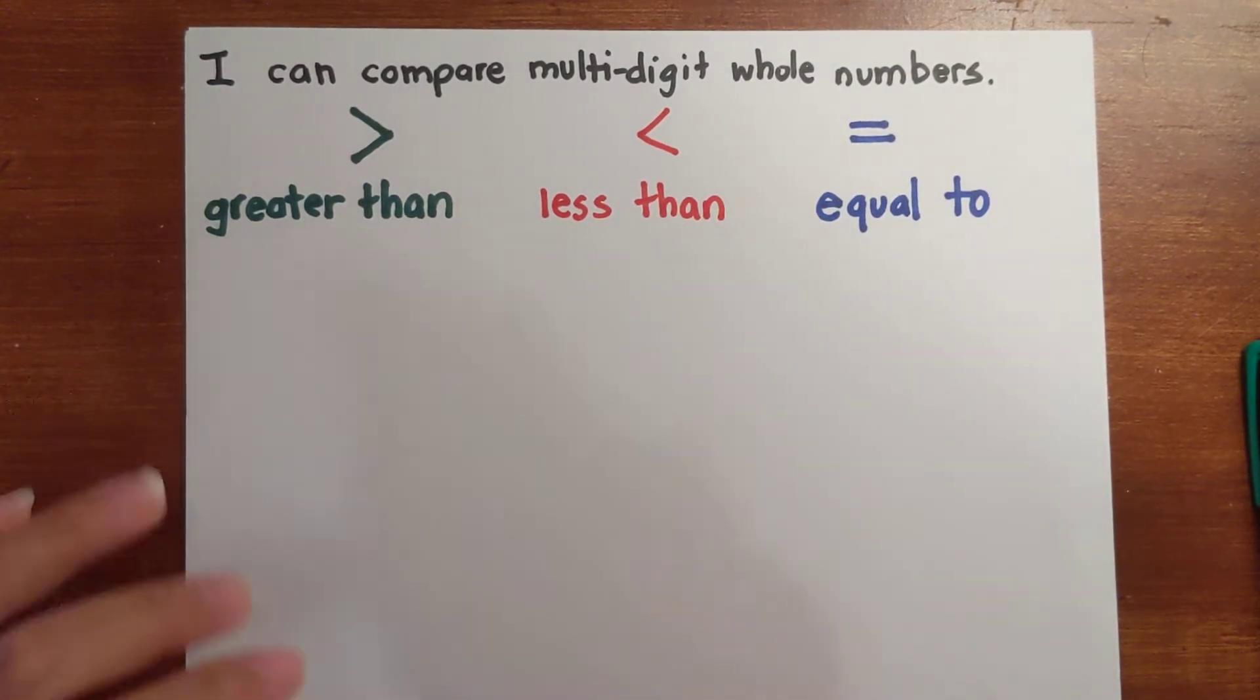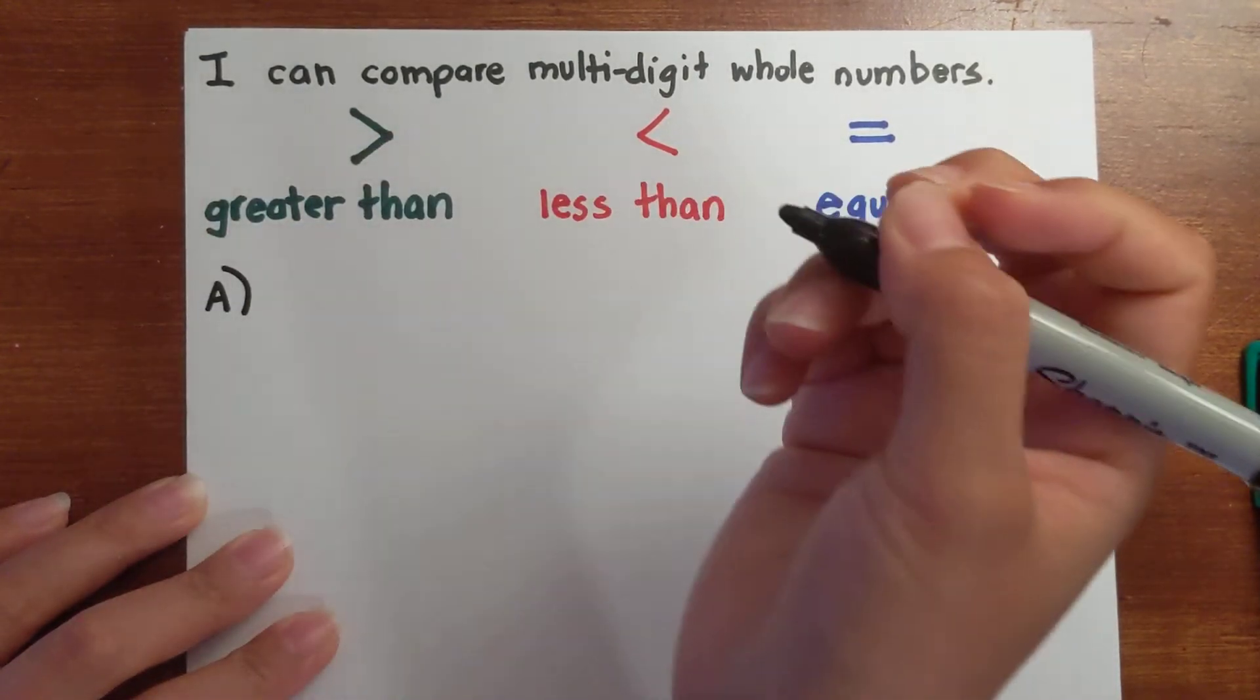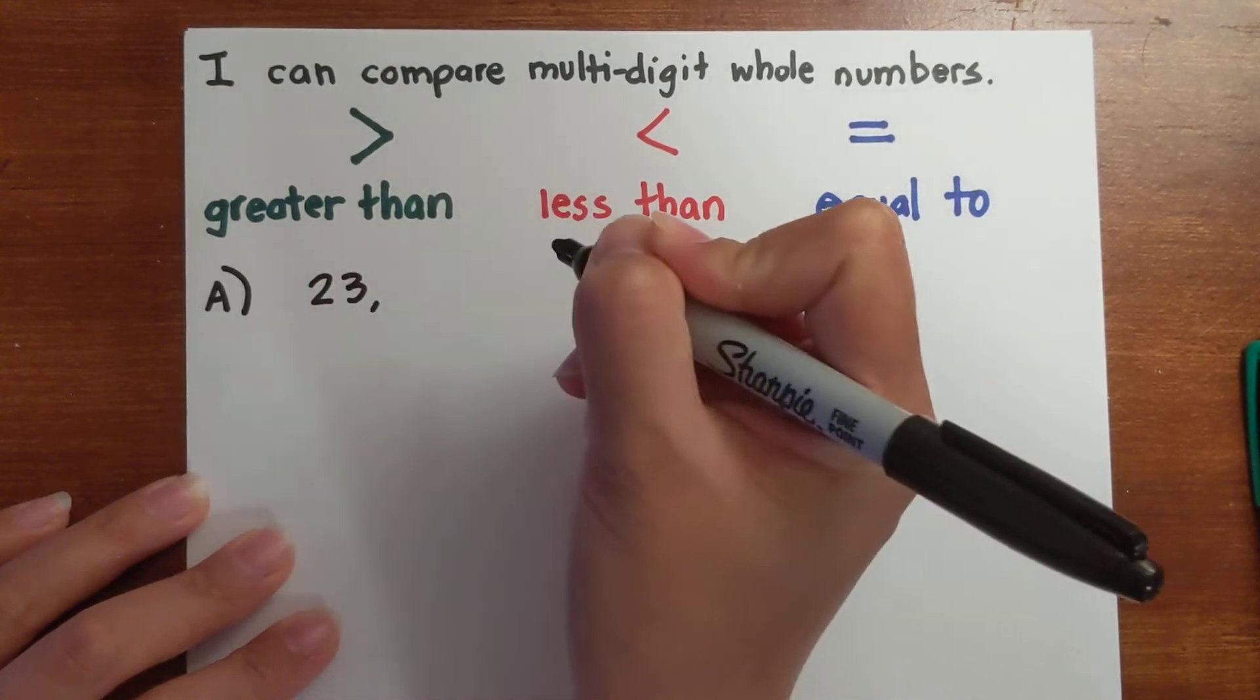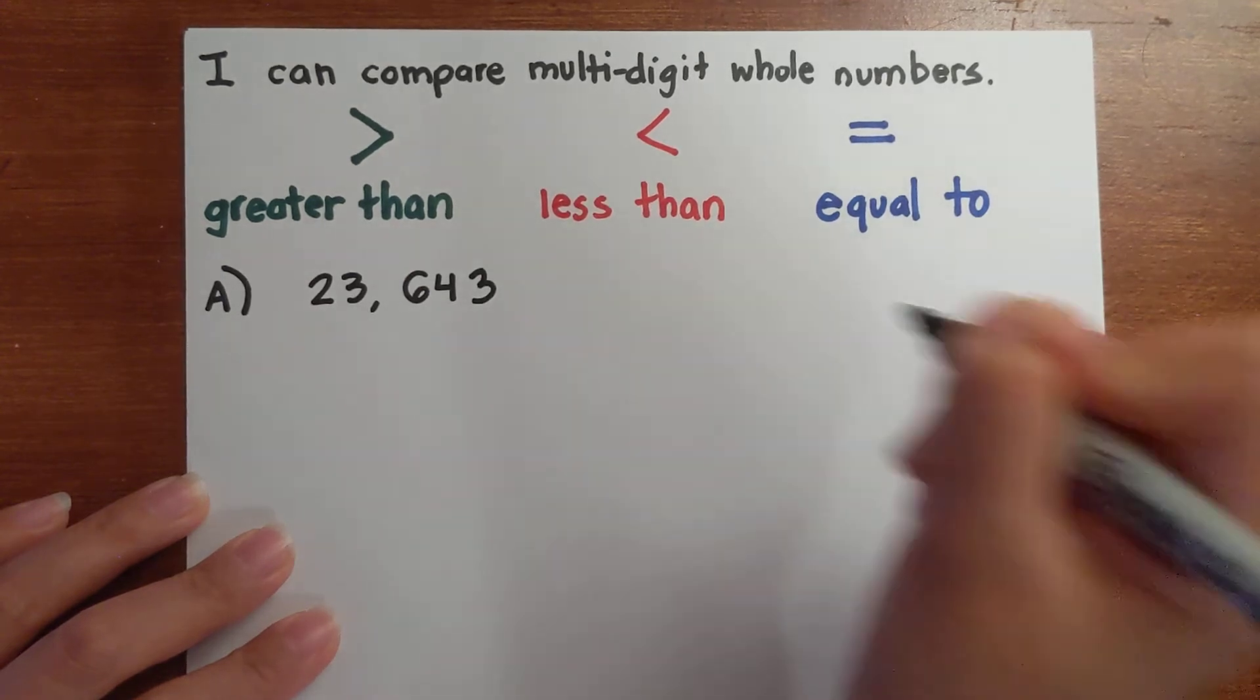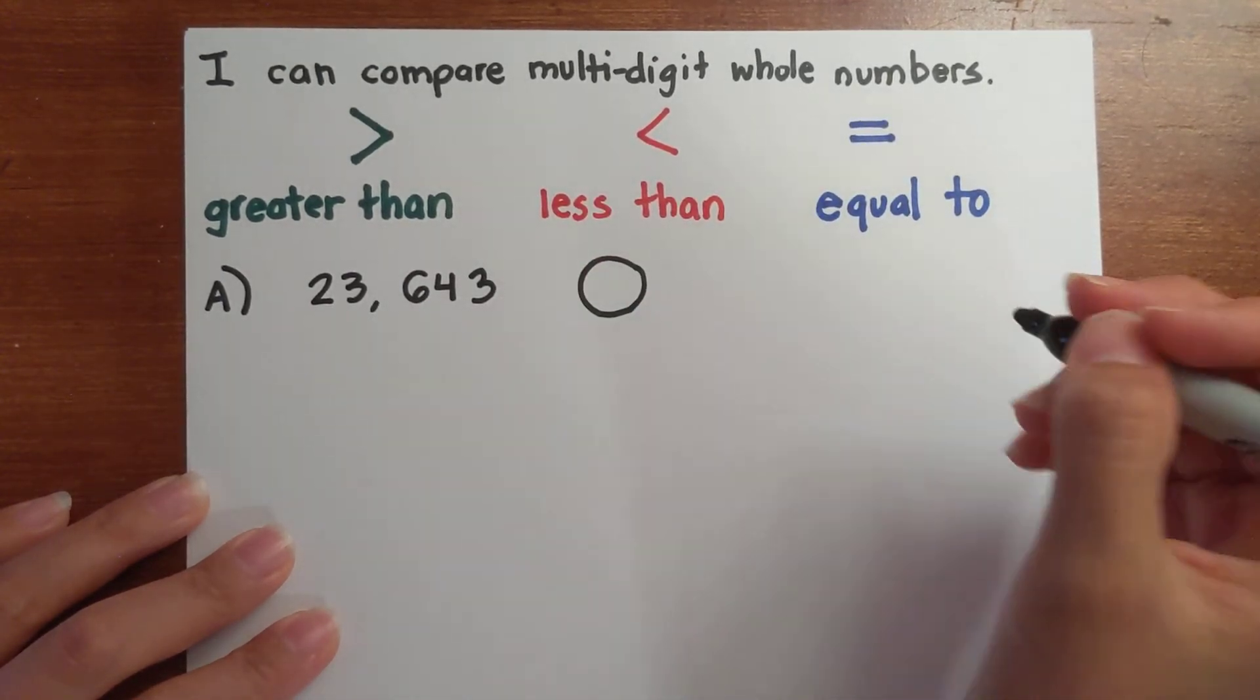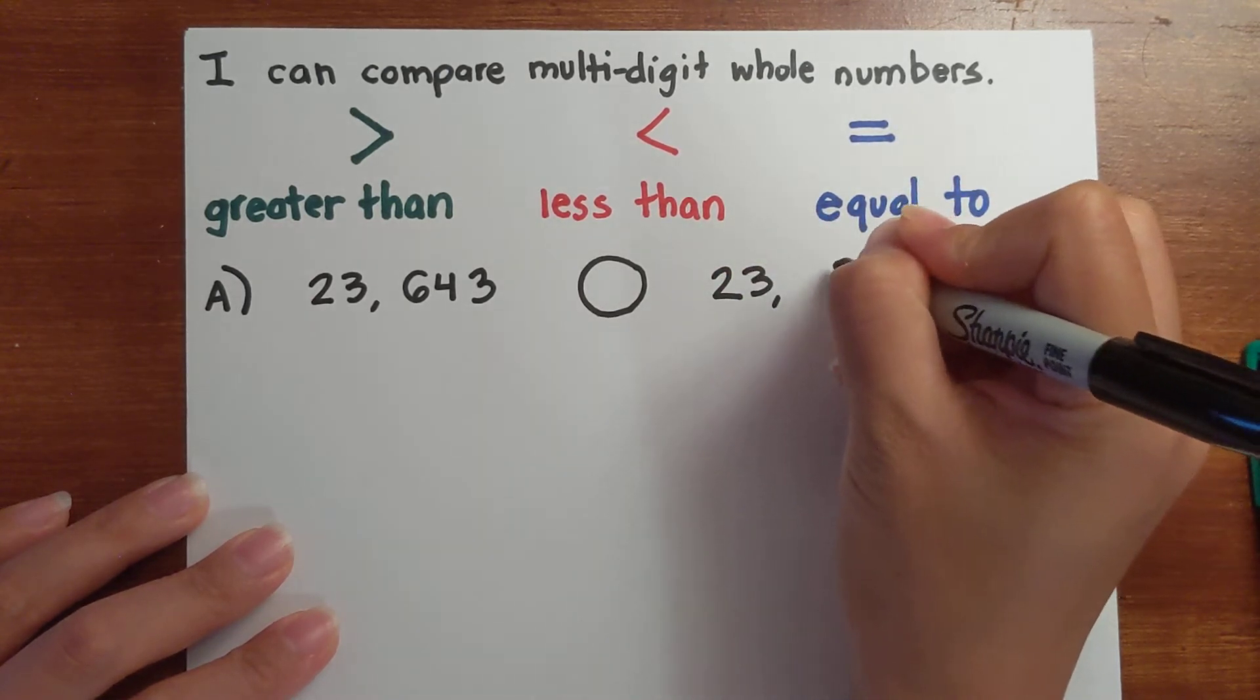Let's do example problem A. Let's say I have two values that I'm comparing. The first value is 23,643, and I'm comparing it to—I'm going to write my symbol in this circle—23,987.